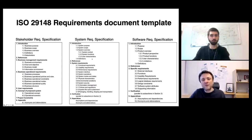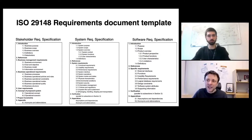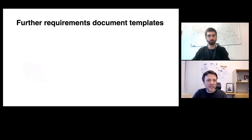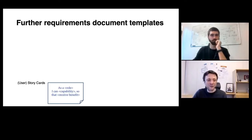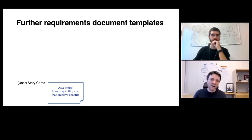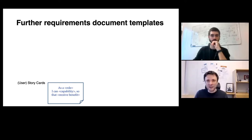In response to the lack of guidance on how to specify requirements, the research and practitioner community has developed different templates. One of these, mentioned in the context of Scrum, are user story cards — a helpful means to specify especially functional requirements, following the sentence pattern: as a role, I can achieve a certain thing using a system capability, so that I can achieve certain benefits or values.